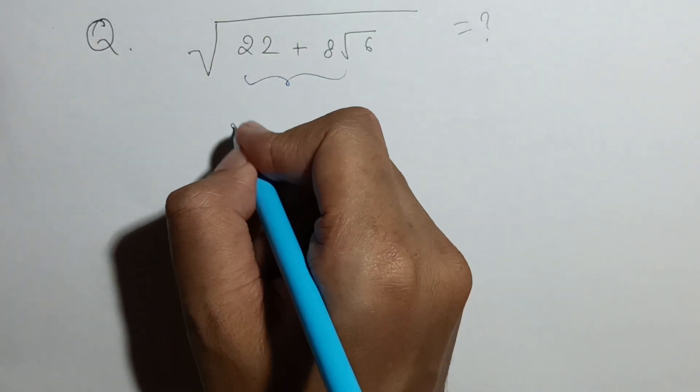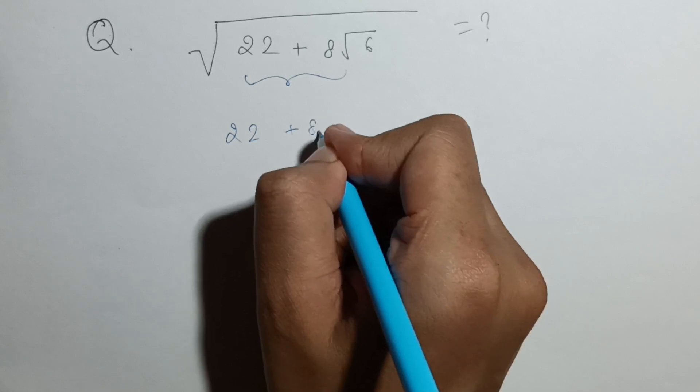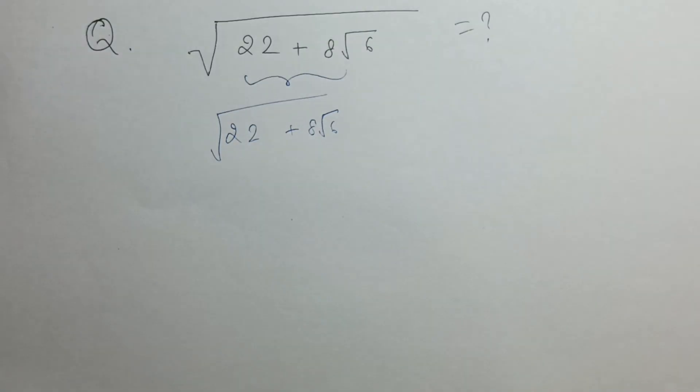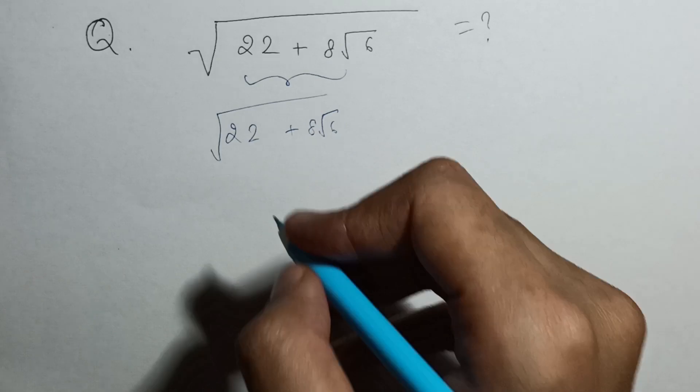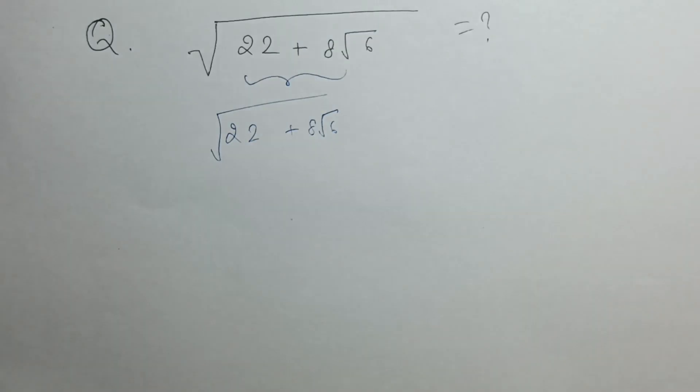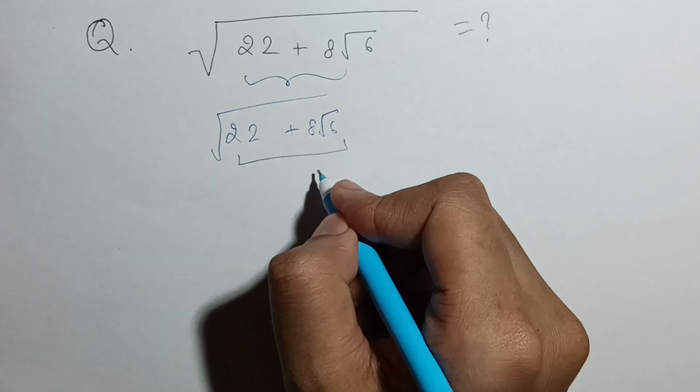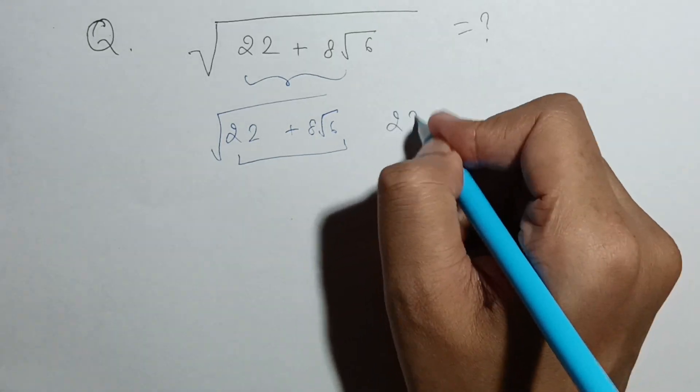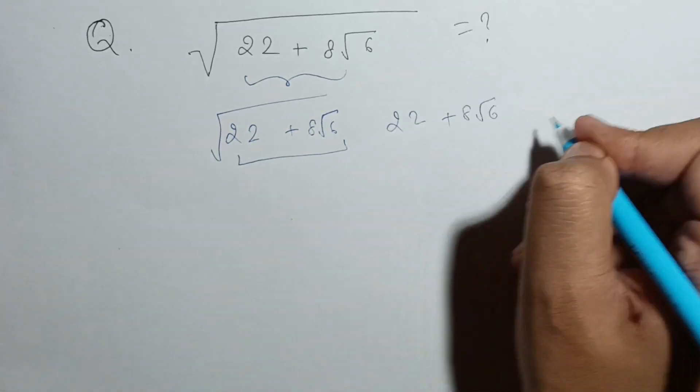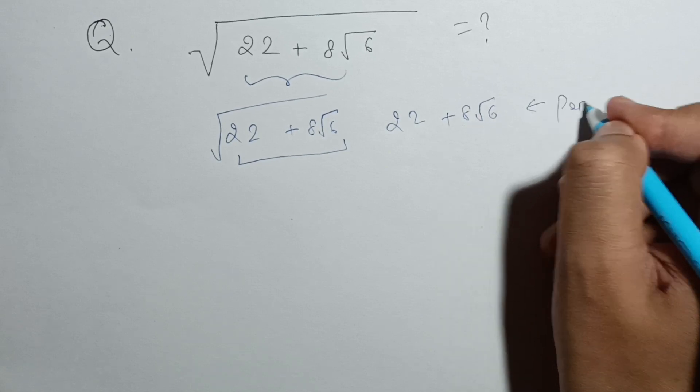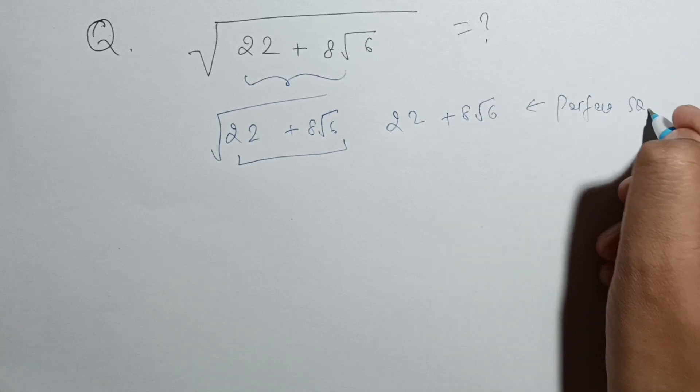So we have the square root of 22 plus 8 root 6. Now if we want to solve this, we have to get rid of this square root. So how can we get rid of this square root? We have to make this a perfect square. So 22 plus 8 root 6 has to be a perfect square of something.